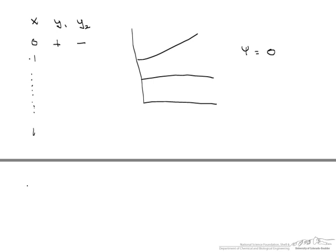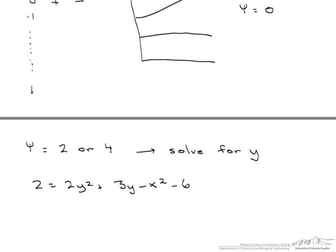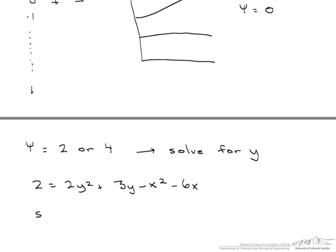These are your streamlines for our streamline equals 0. Now instead of setting it equal to 0, you can use this stream function to equal for example 2 or 4, and you solve it for y. Except now your equation is going to be, for example, 2 = 2y² + 3y - x² - 6x. So you solve for y, and then plot this particular series or families of streamlines.